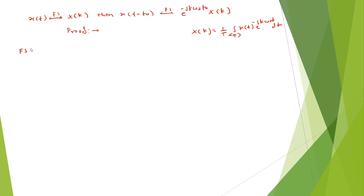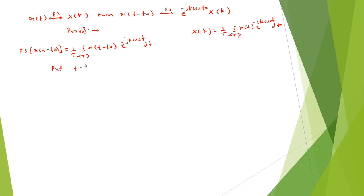The Fourier series of x of t minus t0 is equal to 1 upon T, integration over the period T of x of t minus t0 into e raised to minus jk omega 0 t into dt. Here we have to substitute for t minus t0, so let us put t minus t0 equal to m.